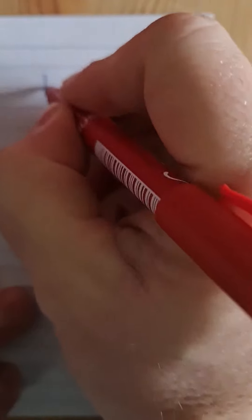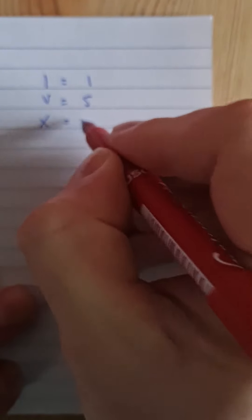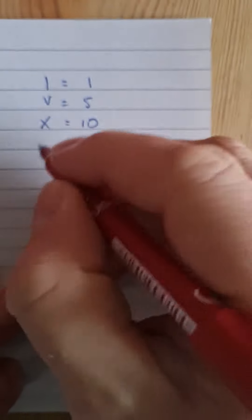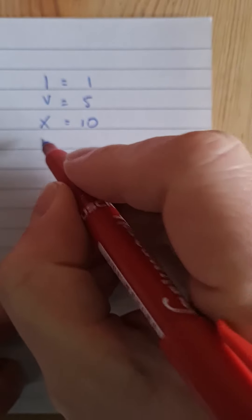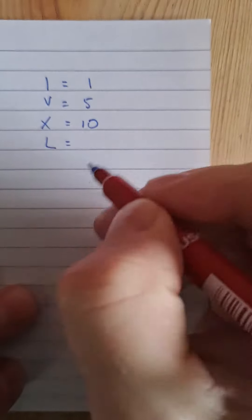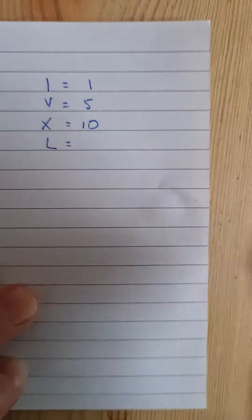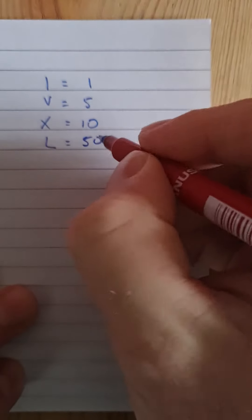So if we remember that I equals 1, V equals 5, X is 10. And I'm sure that you're actually saying these as I do them because you're very good at these. L equals, and I'm sure you've already said 50.